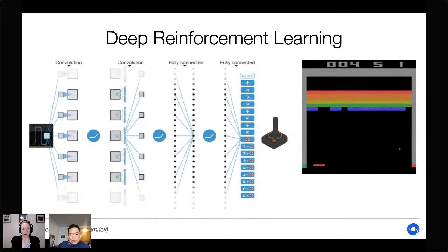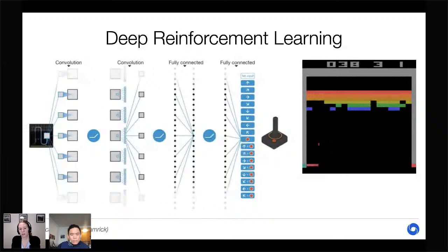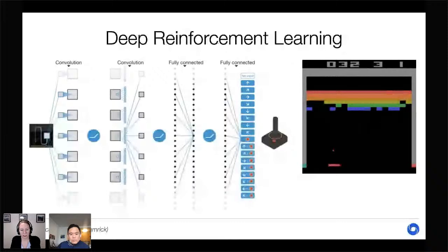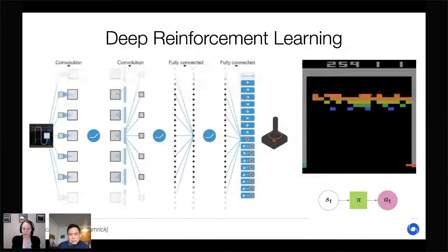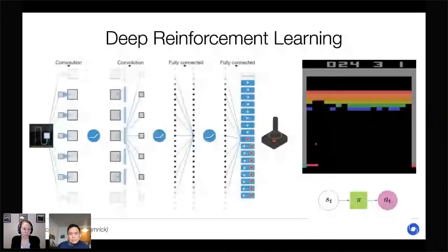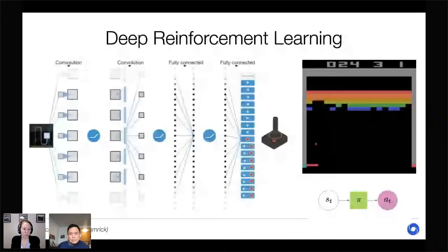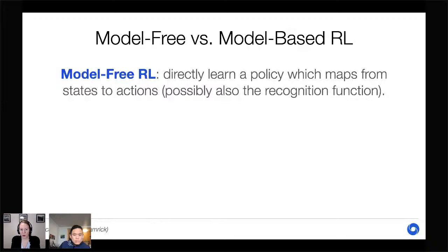For example, the DQN neural network architecture trained by colleagues at DeepMind plays Atari games like Breakout. The input is an observation of the game, which is processed through neural network layers to output an action like 'move the joystick up.' In contrast, model-based RL focuses on learning the transition, reward, and recognition functions, from which a policy can be computed — a process known as planning.